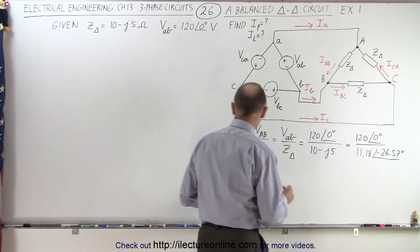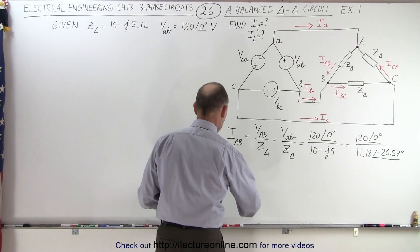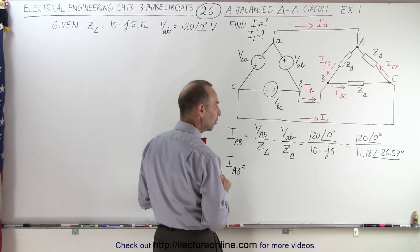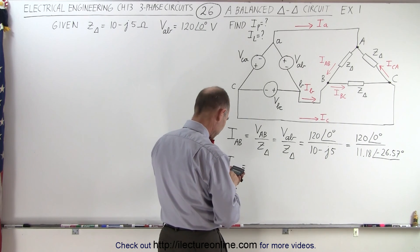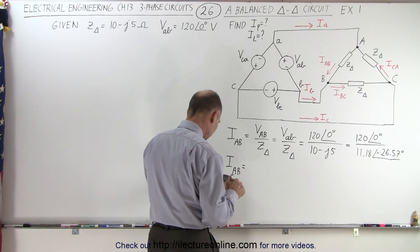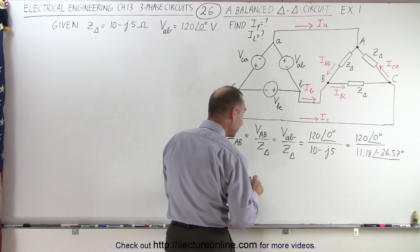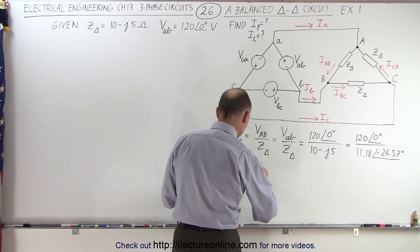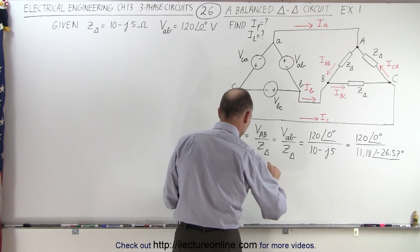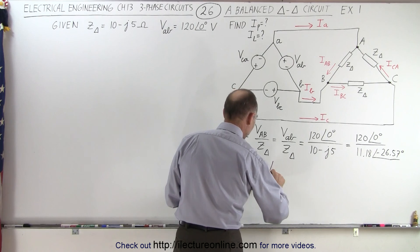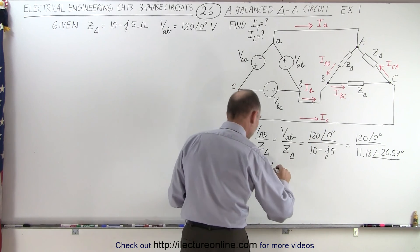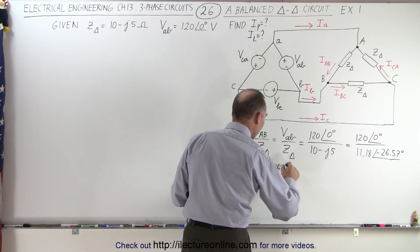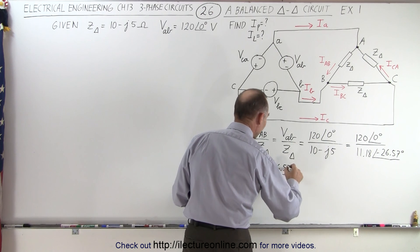So we can then say that IAB is equal to 120 divided by 11.18, which is 10.73, with a phase angle of — when we bring that to the top — positive 26.57 degrees. That's in terms of amps. So there's our first phase current.